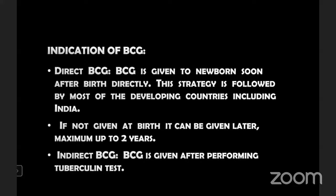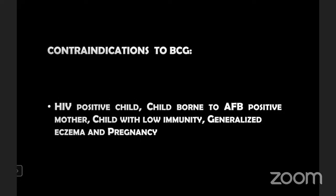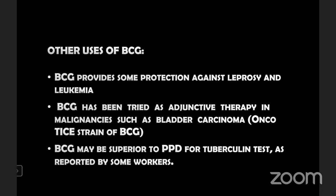BCG is given to newborns soon after birth, as practiced in most developing countries including India; if not given at birth, it should be given maximum within 2 years. Indirect BCG is given after performing the tuberculin test. Contraindications include HIV-positive children, child born to an acid-fast bacillus positive mother, child with low immunity, generalized eczema, and pregnancy. Other uses of BCG: provides some protection against leprosy and leukemia; has been tried as adjuvant therapy in malignancy such as bladder carcinoma.